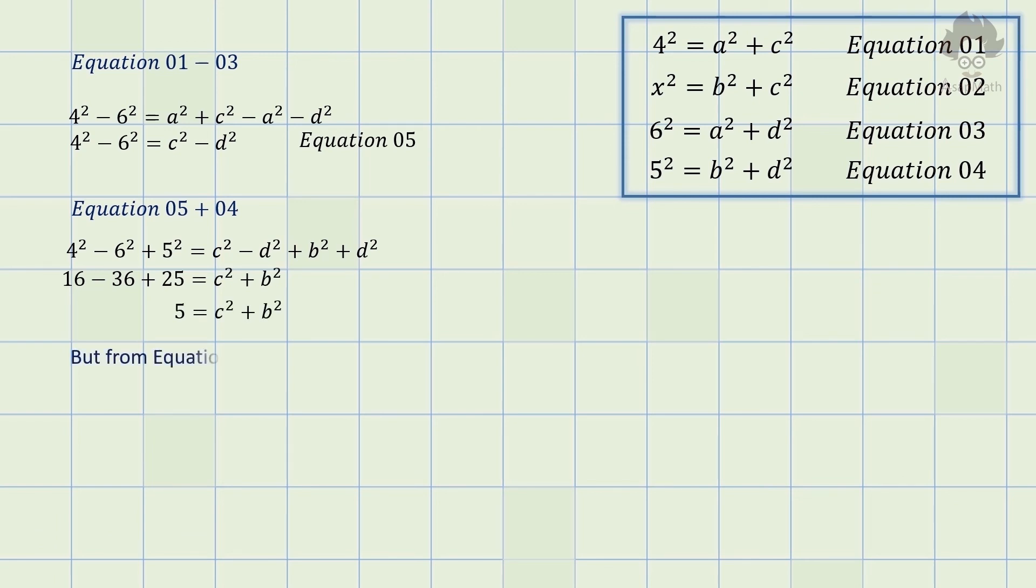From equation 2, we know that x squared is equal to b squared plus c squared. So x squared is equal to 5 and x is equal to root 5.